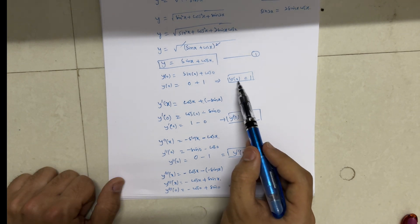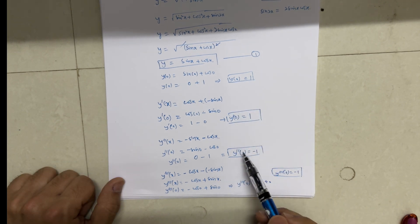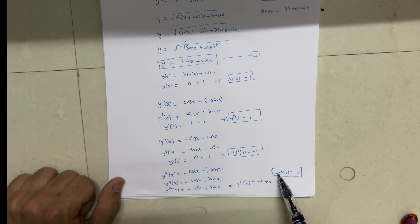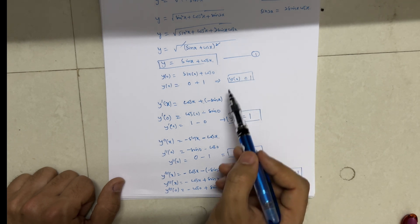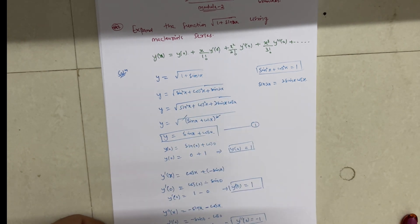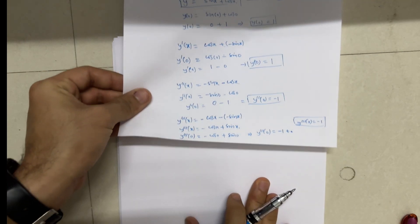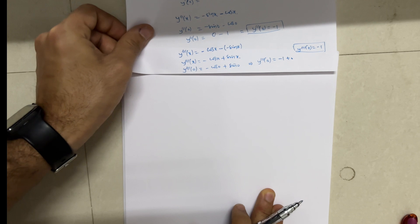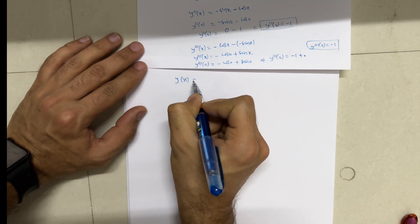To summarize the values: y(0) = 1, y'(0) = 1, y''(0) = −1, y'''(0) = −1. Now we put these four values into the Maclaurin series to get the final answer. Let me write the Maclaurin series again.